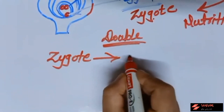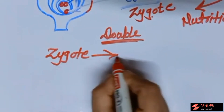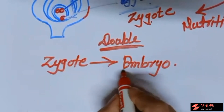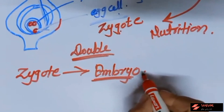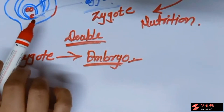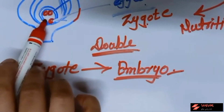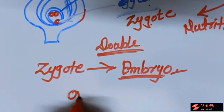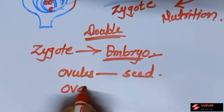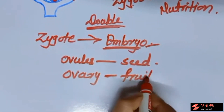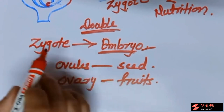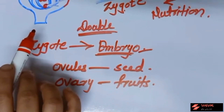After formation of the zygote, it divides mitotically many times and an embryo is produced. This embryo develops entirely inside the ovary, with the endosperm providing nutrition. After development, the ovules present inside the ovary transform into seeds, and the entire ovary transforms into the fruit. When the fruit bursts or opens, the seeds are freed and when these seeds fall on a suitable substrate, they start to germinate.